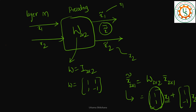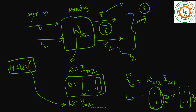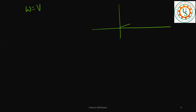Now rather than taking an arbitrary W, we take W = V from the SVD H = U Σ V^H. After performing the SVD and understanding the channel, we pick the value of W from there. So at the transmitter, we are forming beams in the directions given by the columns of V — v1_bar is the first column, v2_bar is the second column — and we form the beams in those directions.